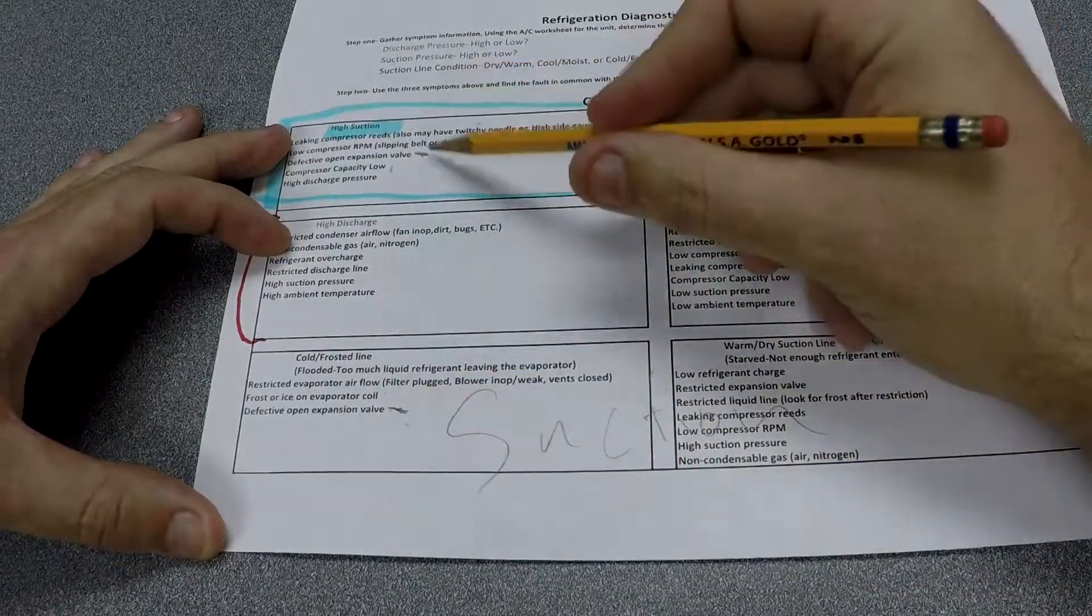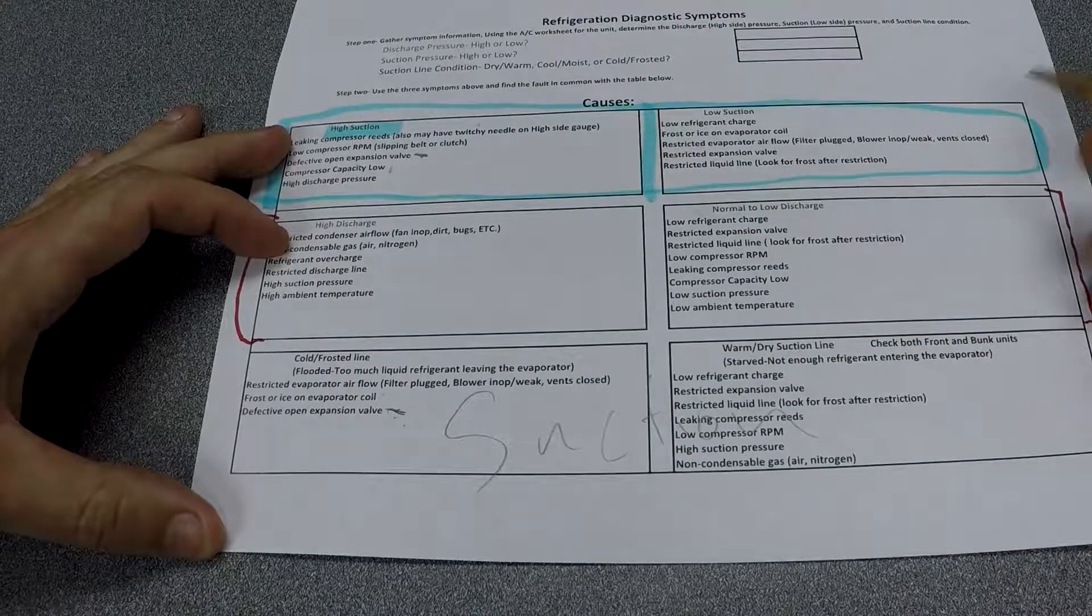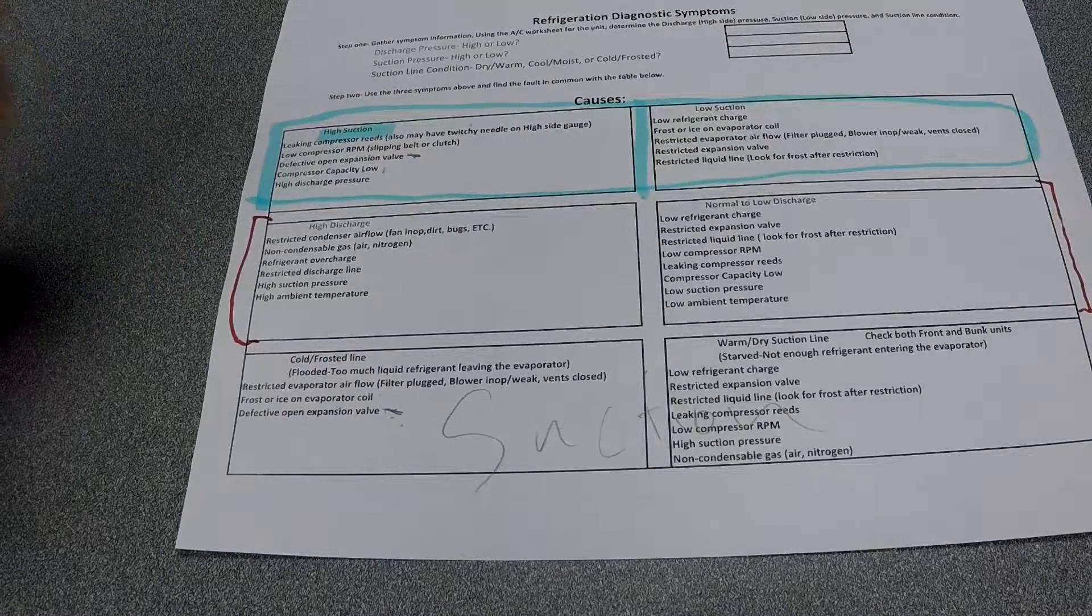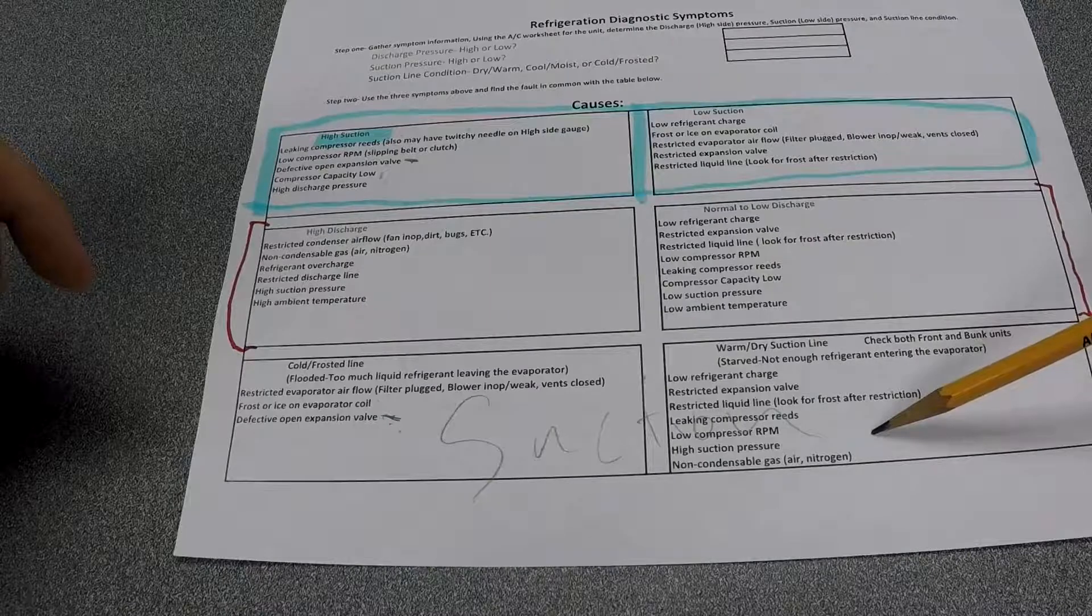So if I had high suction and a cold frosted line, that'd be the first thing that's common between the two I would look at. On this side is a warm dry suction line. Of course, most of the time it's going to be just a moist line, cool moist line. If it doesn't fit in that category, you can use this for more things to look at.